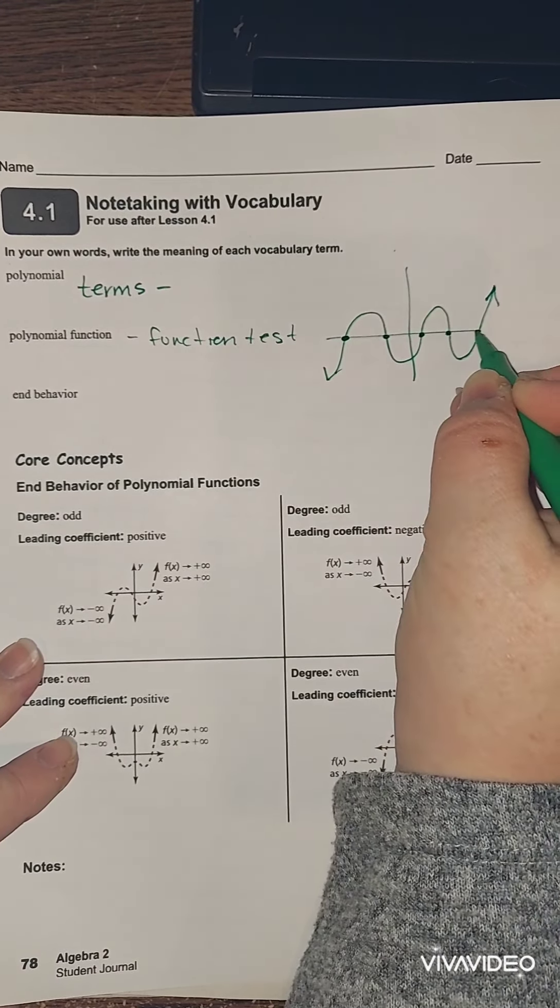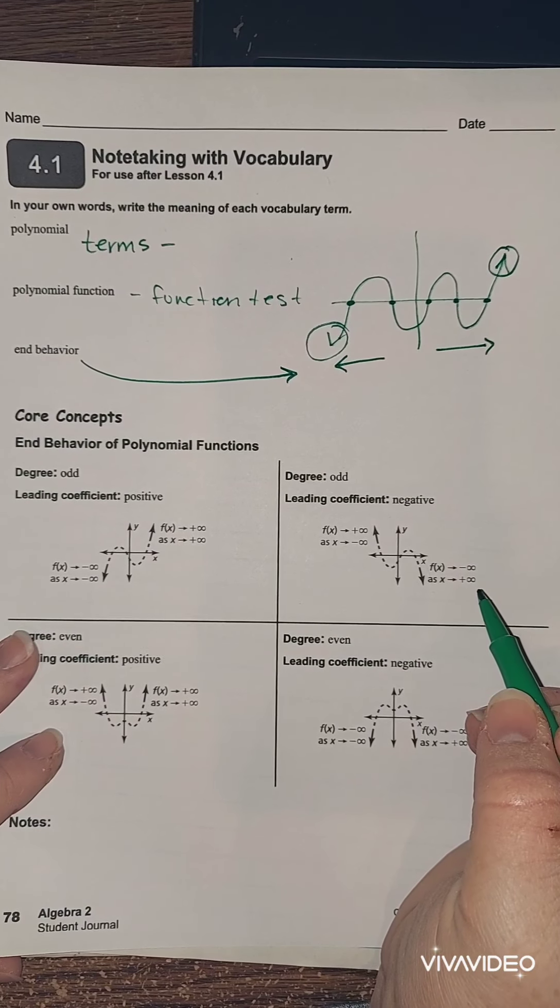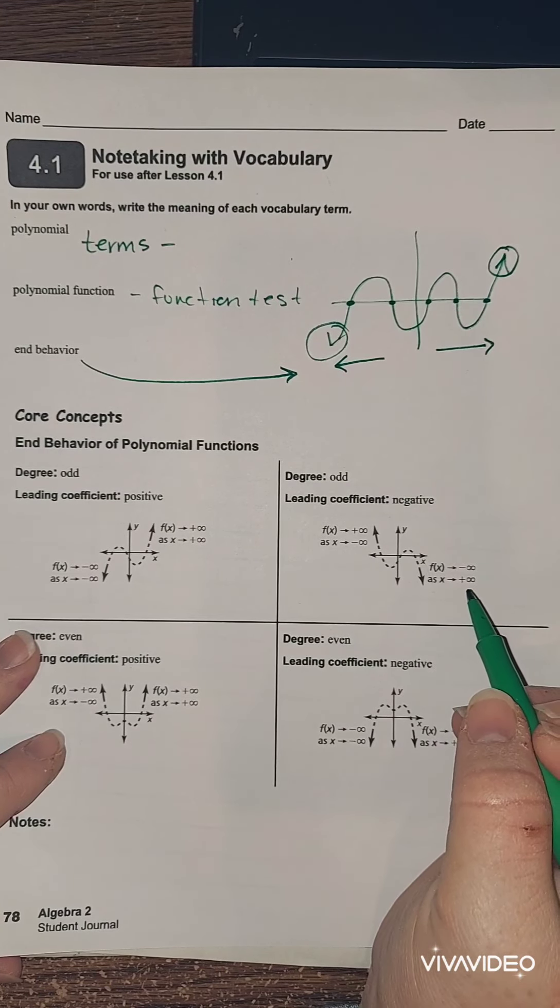Okay, so polynomials, we're going to do things with polynomials, we're going to combine polynomials, we're going to do a lot of things with polynomials, and we're going to see these end behaviors that we're talking about, okay. So we're going to start noticing some trends with the things. But before we do that, we're going to talk about a little bit about polynomials in general.